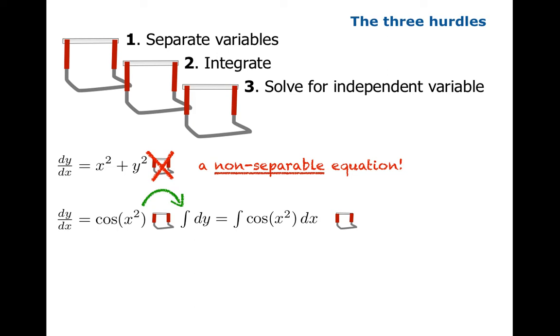But now you're set up to integrate and you realize that even though it's separable as an equation you can't integrate cosine x squared in exact form. So it turns out you trip on the second hurdle. You can't actually integrate both sides.